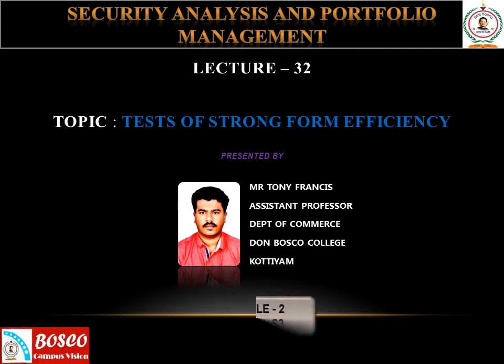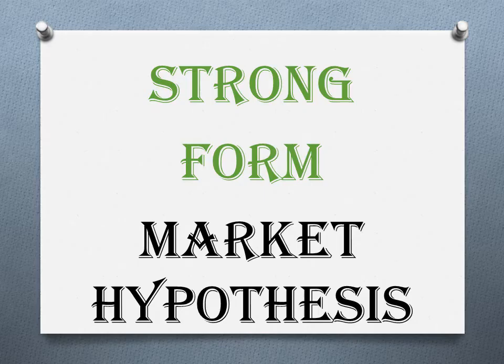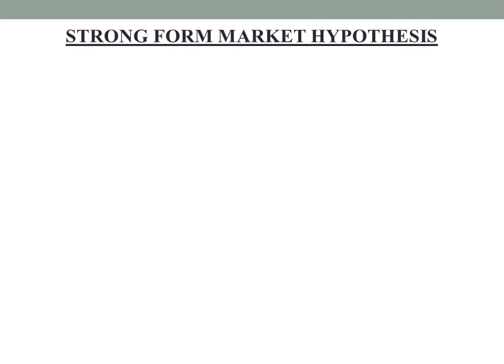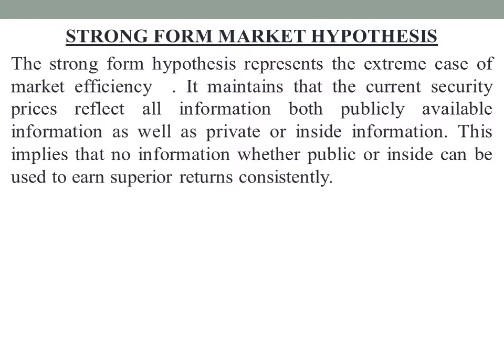Welcome back to Bosco Campus Vision. In the last session we discussed the semi-strong form of market hypothesis. In this session we will look into the last form of market hypothesis, that is the strong form hypothesis. The strong form hypothesis represents the extreme case of market efficiency. It maintains that the current security prices reflect all information — both publicly available information as well as private or inside information. This implies that no information, whether public or inside, can be used to earn superior returns consistently.